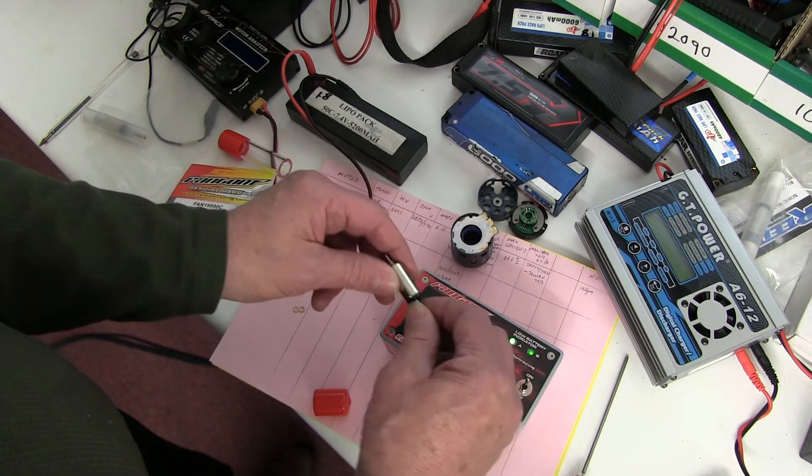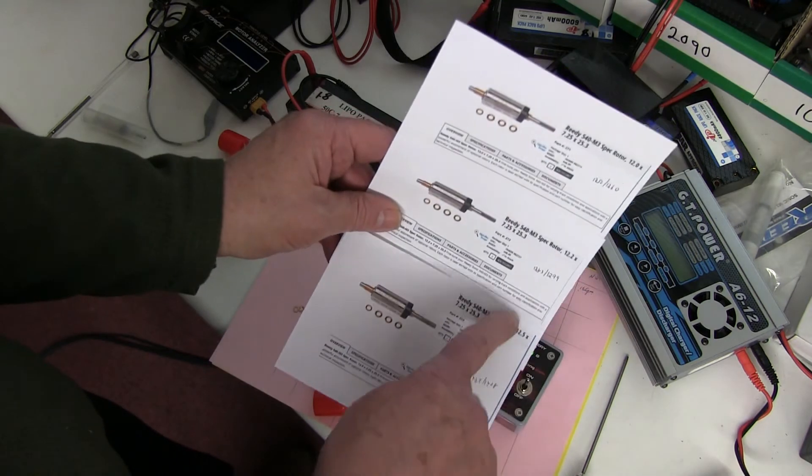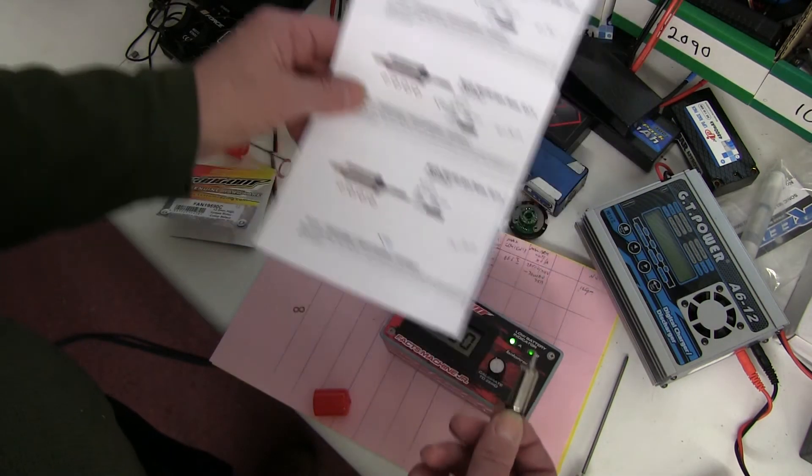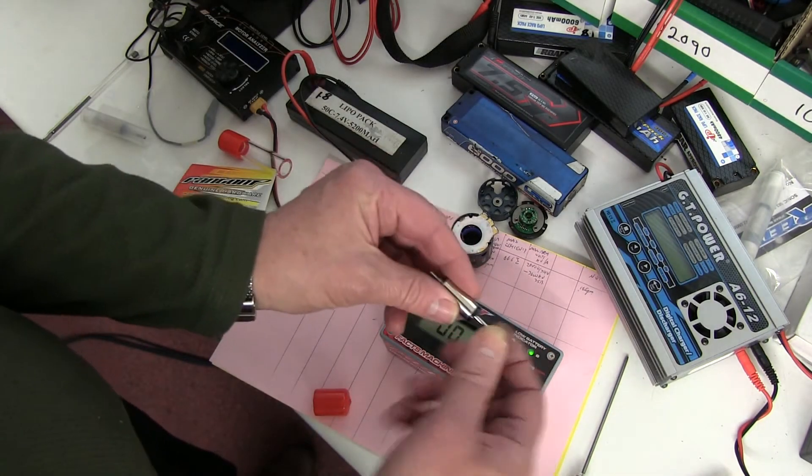So as opposed to the 3D one, as it went smaller, the Gauss went down. Now this one's gone smaller and the Gauss has actually gone up. So it'll be interesting to see how the motor works with this one in it.